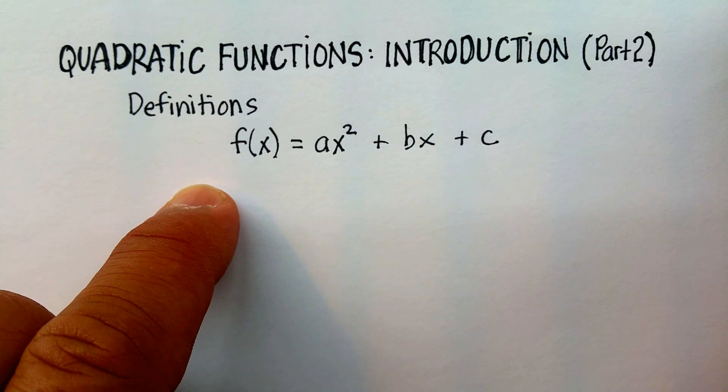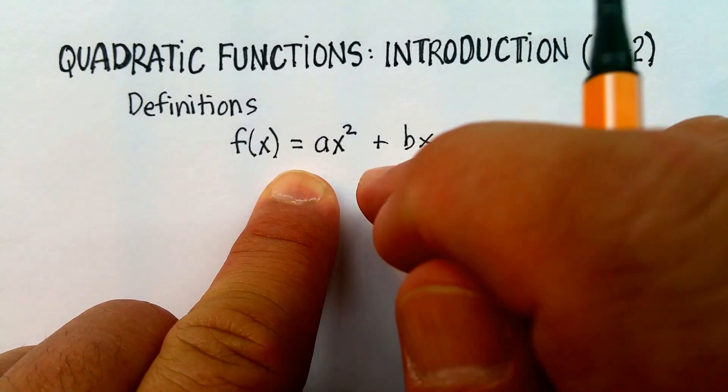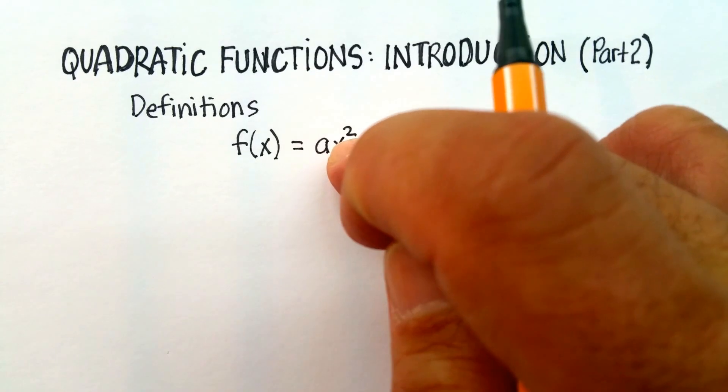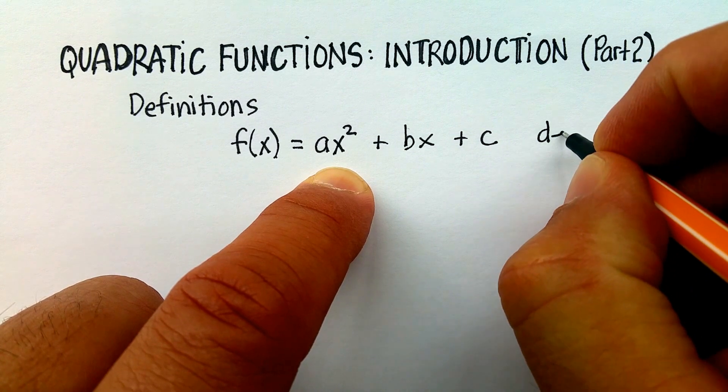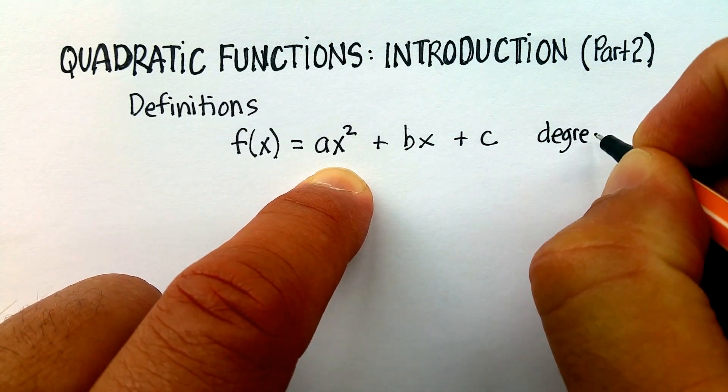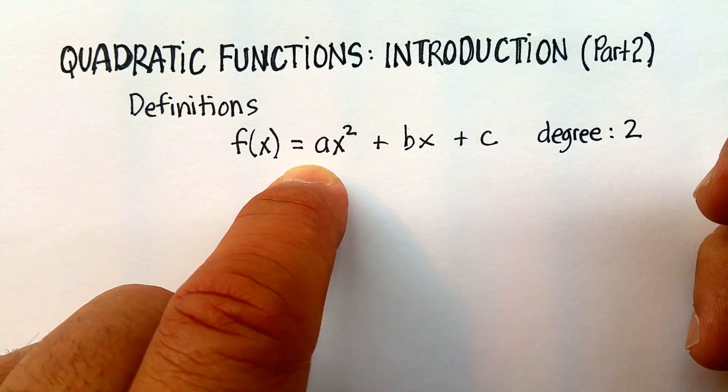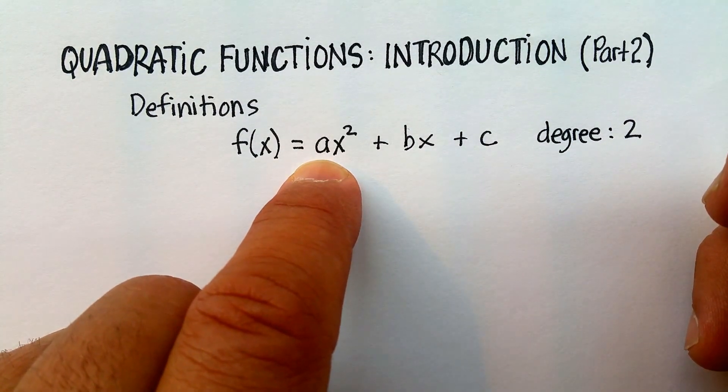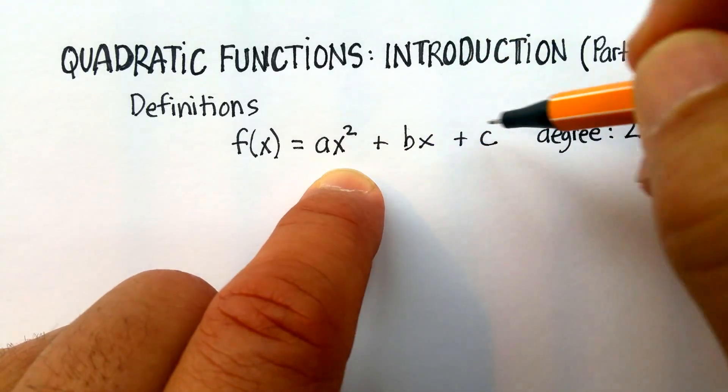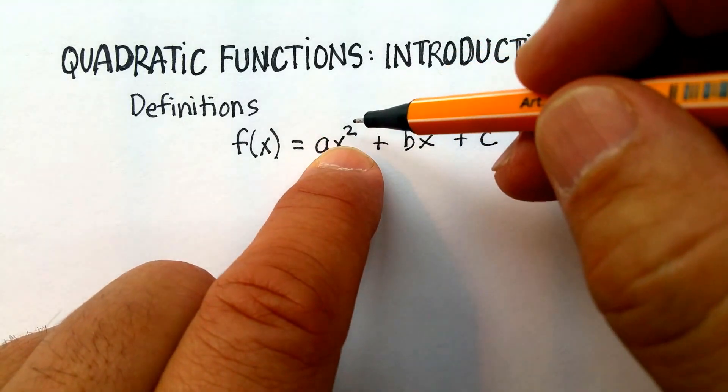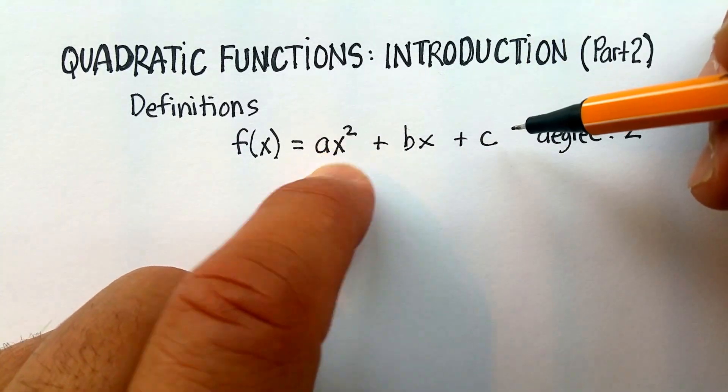Now, the defining characteristic of this quadratic function is this two. It's a square. It's also called the degree, the degree of two. The degree is defined as that variable whose exponent—let me say it again—the exponent in the equation that's the largest number defines what the degree of that function is.